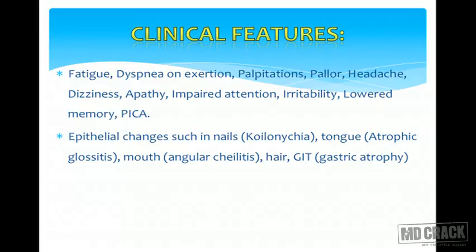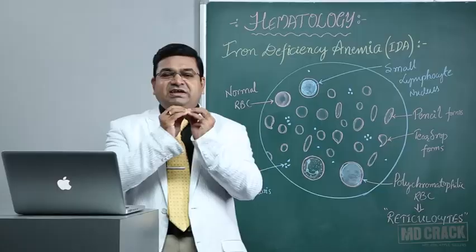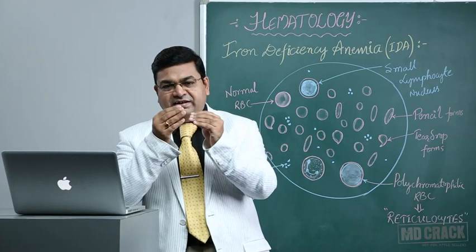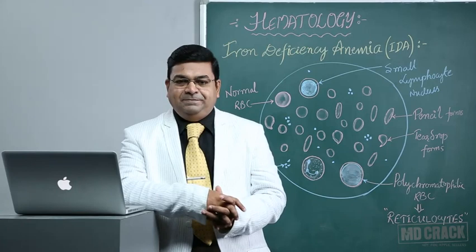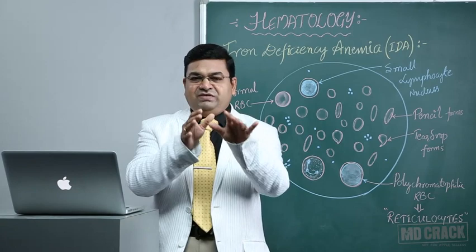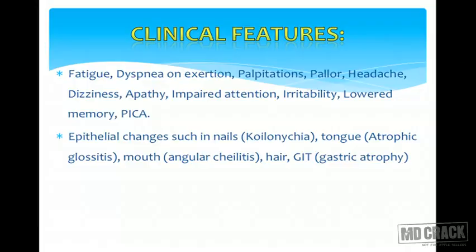Look for nail changes called koilonychia. Initially it starts as a flattened nail bed, and later as iron deficiency worsens, you see a spoon-shaped deformity of the nails — koilonychia. In severe, long-standing iron deficiency, the tongue may show atrophic glossitis, the mouth may show angular cheilitis, and there can be changes in hair and gastric atrophy.